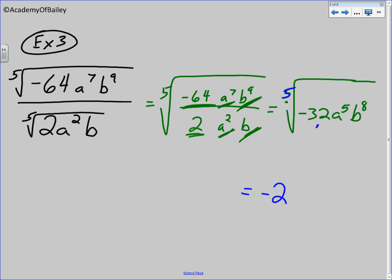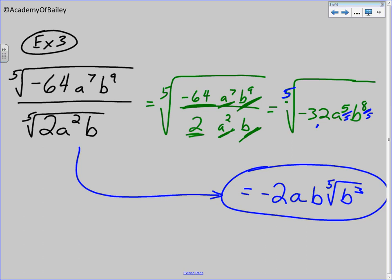Okay, so now how many groups of five can we pull out of a to the fifth and b to the eighth? Well, we can pull one group of five out of a to the fifth with nothing left over. We can pull one group of five out of b to the eighth with b to the third power left over. And so we have simplified this. And there you go.